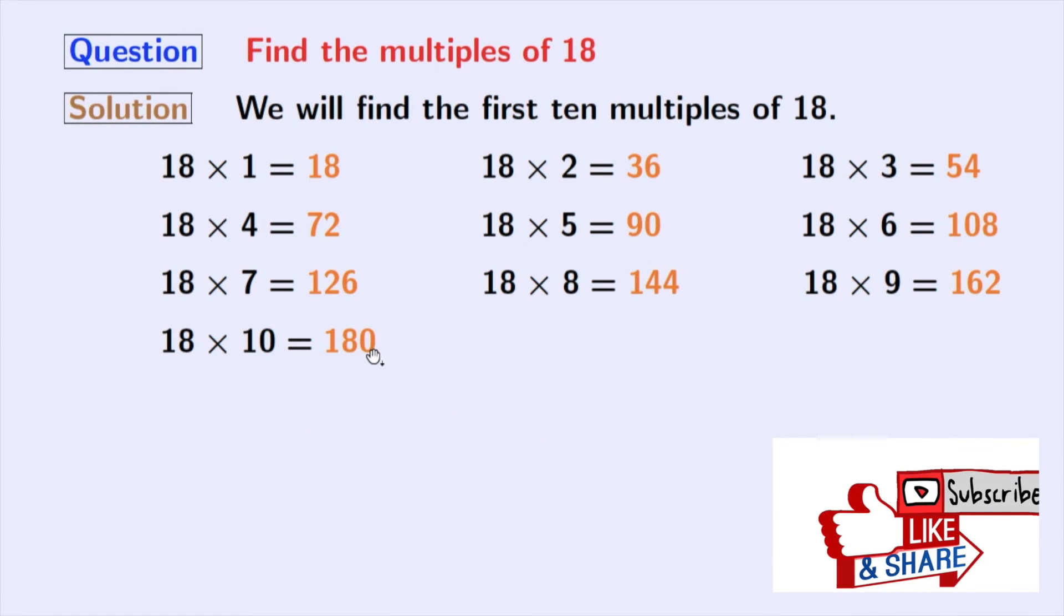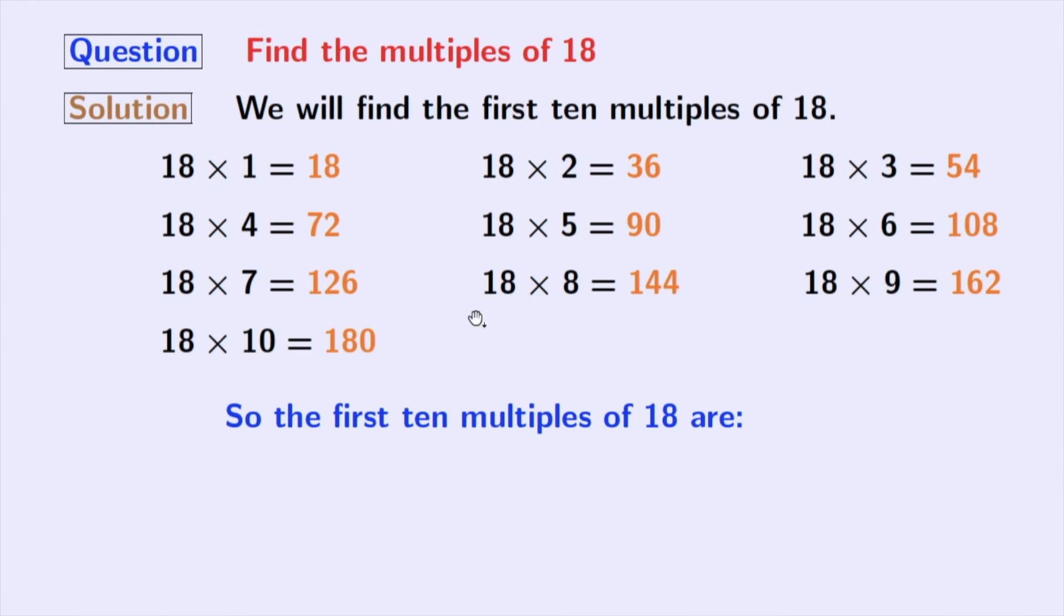So we have obtained all the first 10 multiples of 18, which are the orange ones. And these are 18, 36, 54, 72, 90, 108, 126, 144, 162, and 180.